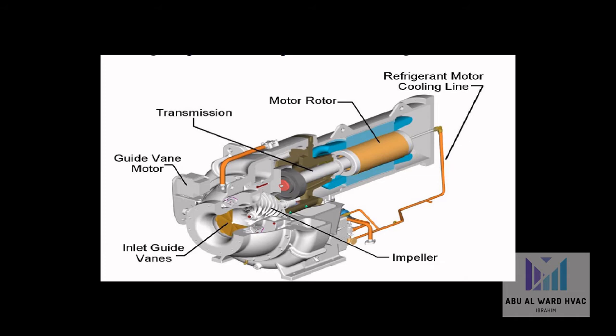Centrifugal compressors fall into two broad categories: hermetic and open. The compressor may be direct drive — where the motor rotor and impeller are on the same shaft — or gear driven.